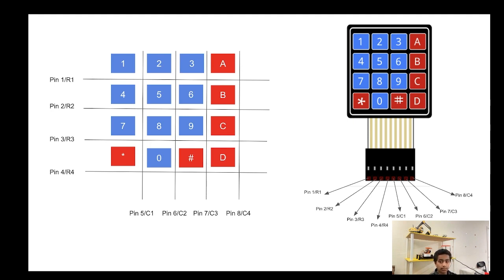The next four pin values for the keypad: pin number 5 initializes column number 1, which includes 1, 4, 7, and the asterisk sign. Pin number 6 initializes column number 2, which is 2, 5, 8, and 0. Pin number 7 initializes column number 3, which includes 3, 6, 9, and the hashtag symbol.